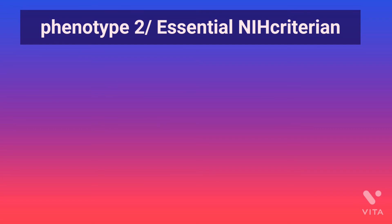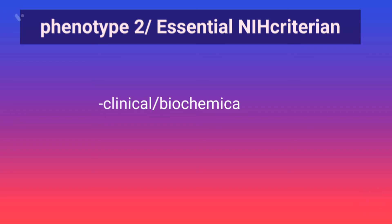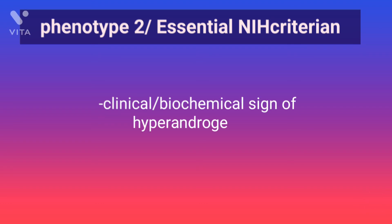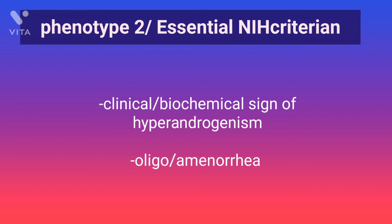Phenotype 2 is also known as the essential NIH criteria — NIH means National Institute of Health. In this phenotype, there is clinical or biochemical evidence of hyperandrogenism and evidence of oligo-anovulation, but there is no evidence of ultrasonographic polycystic ovaries, or polycystic morphology.